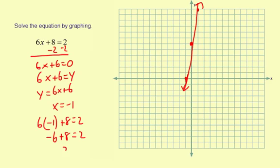Negative 6 plus 8 is 2, so I have 2 equals 2. This checks out, which means x equals negative 1 is in fact the solution to the equation.